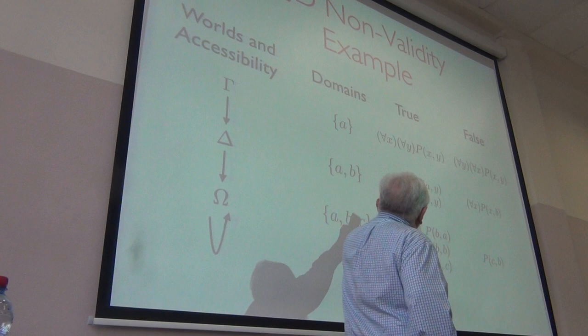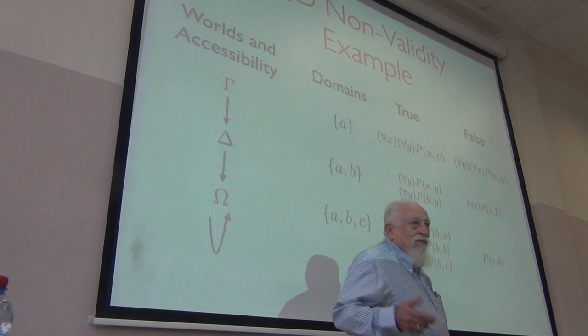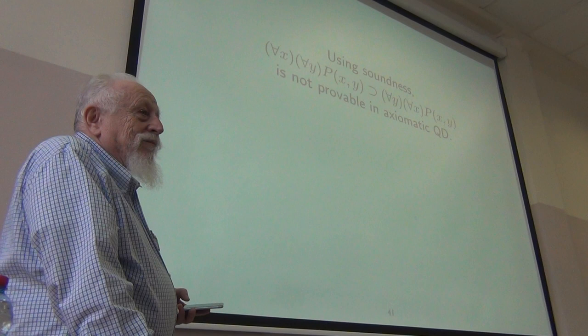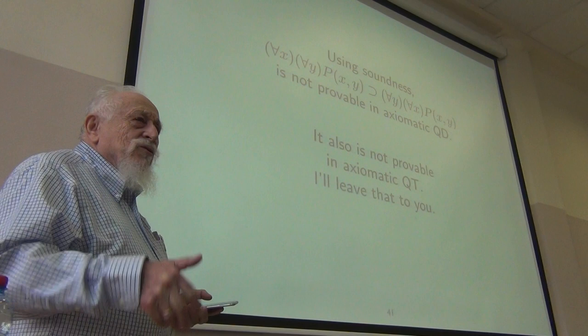So your quantifiers don't commute. So this is not provable in QD. It's also not provable in QT, but you have to fuss with the model a little. I'll leave that to you.